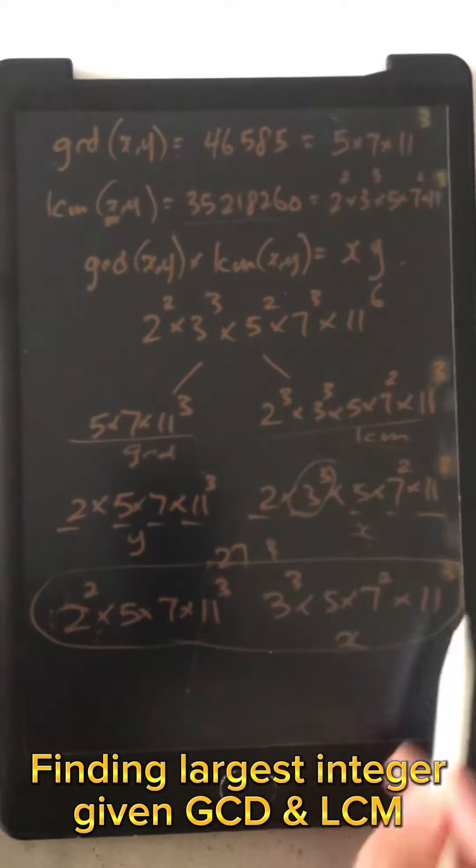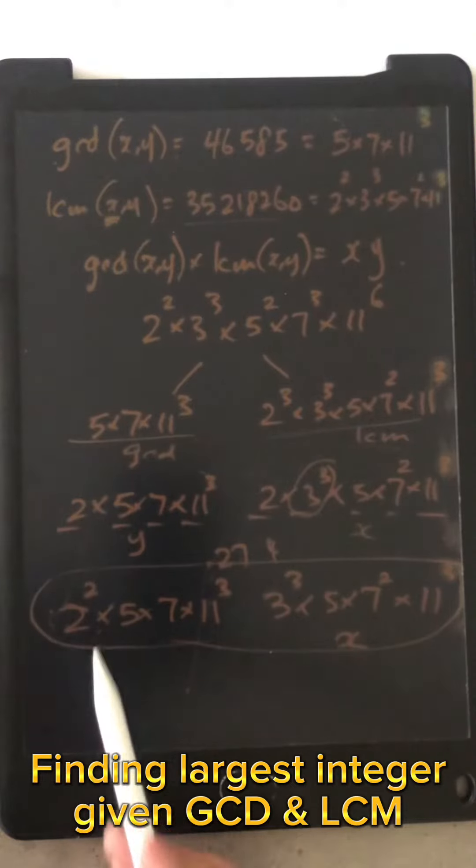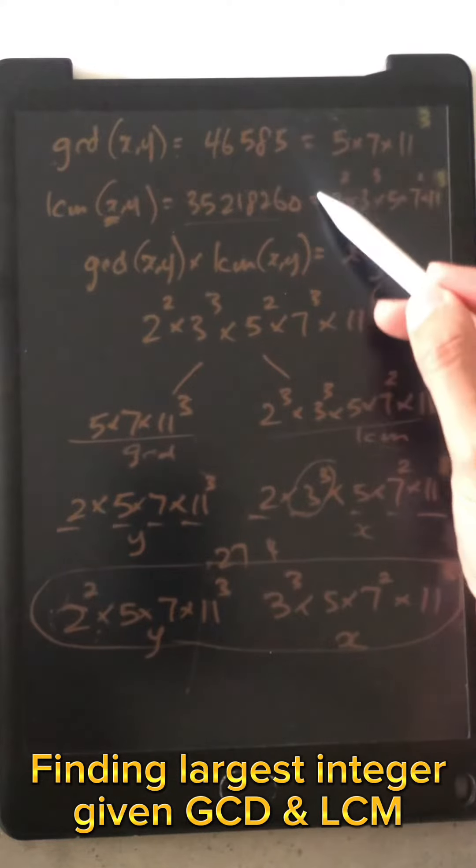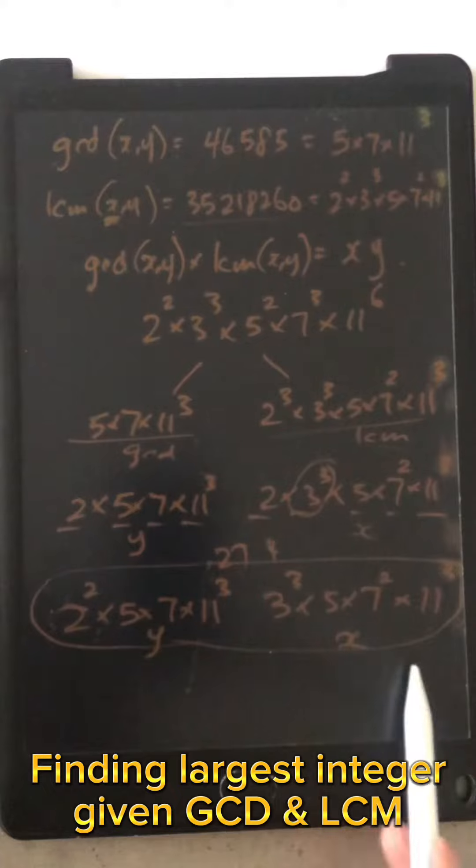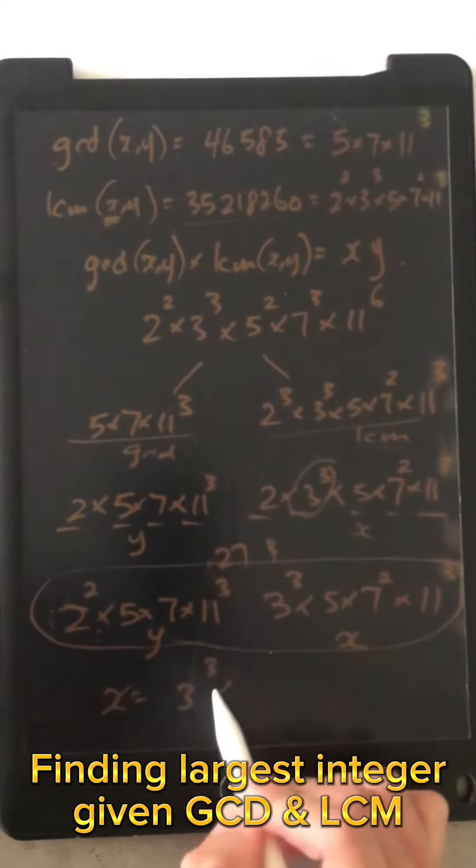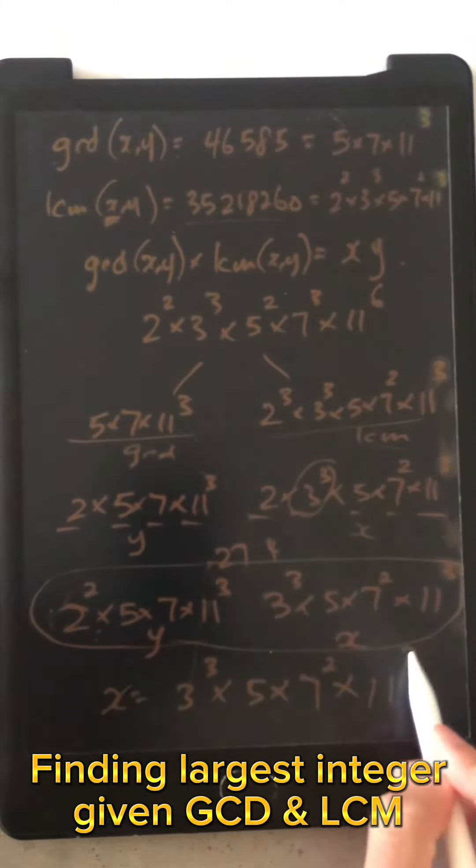And the x is not equal to the LCM. And you can check, right? Because these x and y's have the divisors of the LCM. And the GCD is also included in each of these. So therefore the solution will be 3 cubed times 5 times 7 squared times 11 cubed.